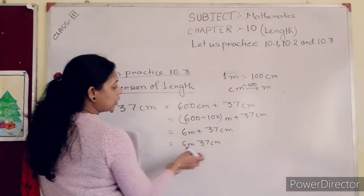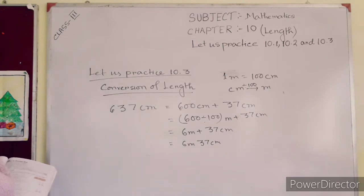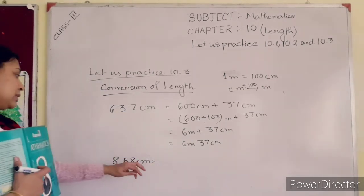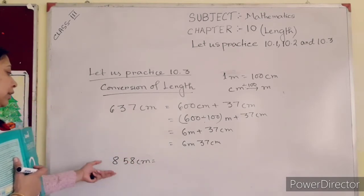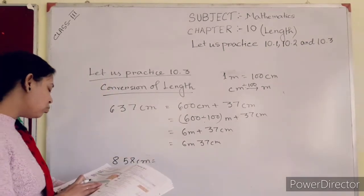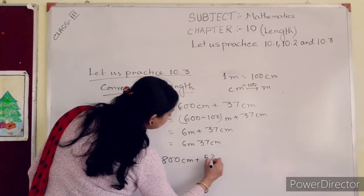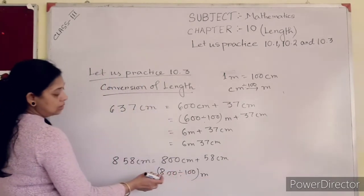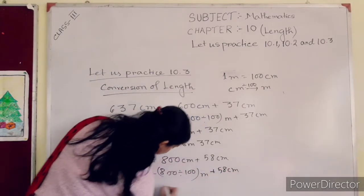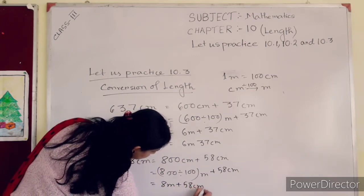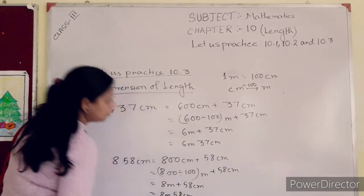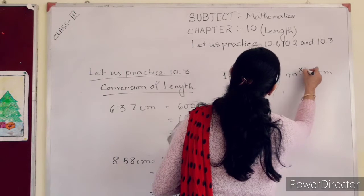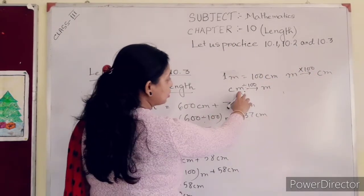Another example: 858 centimeter — express this length into meter and centimeter, because it is more than 100. So: 800 centimeter + 58 centimeter = 800 ÷ 100 meter + 58 centimeter = 8 meter + 58 centimeter = 8 meter 58 centimeter. To summarize: when you convert meter to centimeter, multiply by 100; when you convert centimeter into meter, divide by 100.